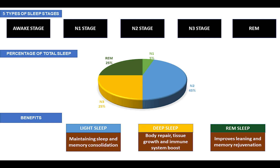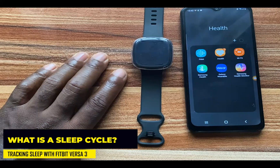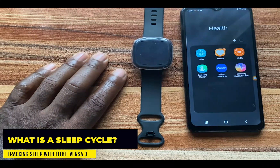REM sleep plays an important role in memory rejuvenation and it is in this stage that vivid dreaming occurs. In summary: light sleep helps in maintaining sleep and memory consolidation; deep sleep helps the body undergo repairs, build bones and muscle, and boost the immune system; and REM sleep helps in memory rejuvenation. Now let's talk about sleep cycles.